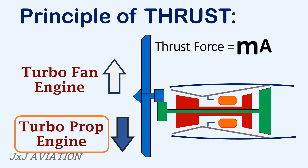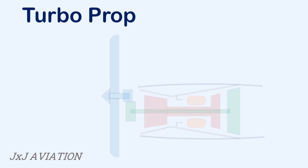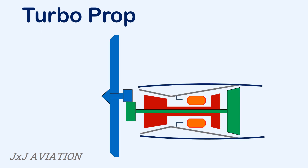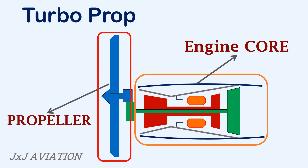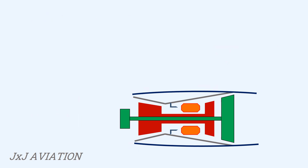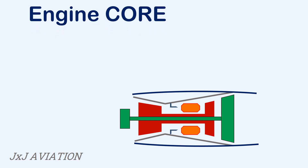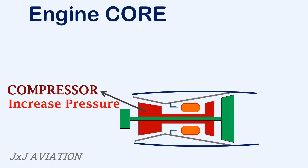Now let's look at the construction of a turboprop engine. The turboprop engine can be divided into two major sections: the engine core, which is similar to a gas turbine engine, and a propeller which is connected to a turbine shaft. The engine core consists of a compressor which is used to compress the air, or to increase the pressure of the air, before it is sent for combustion.